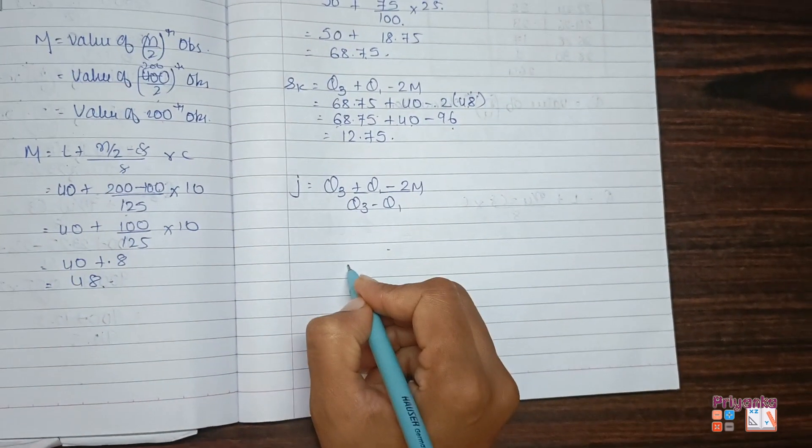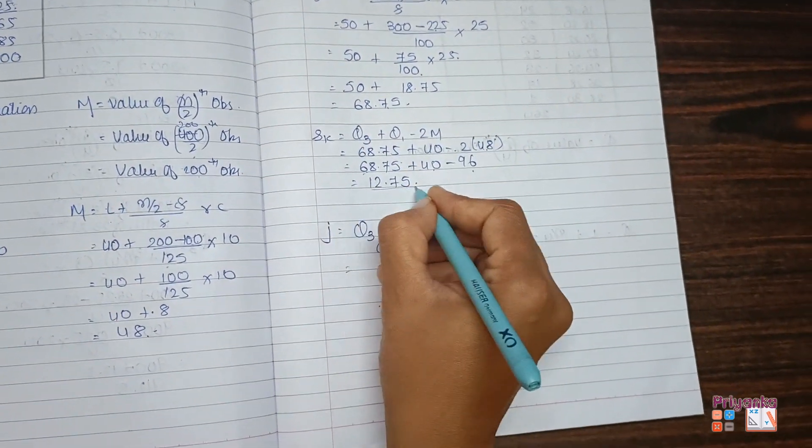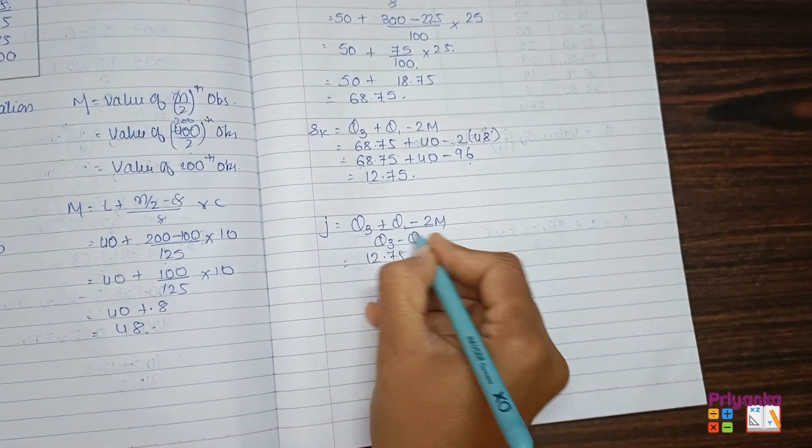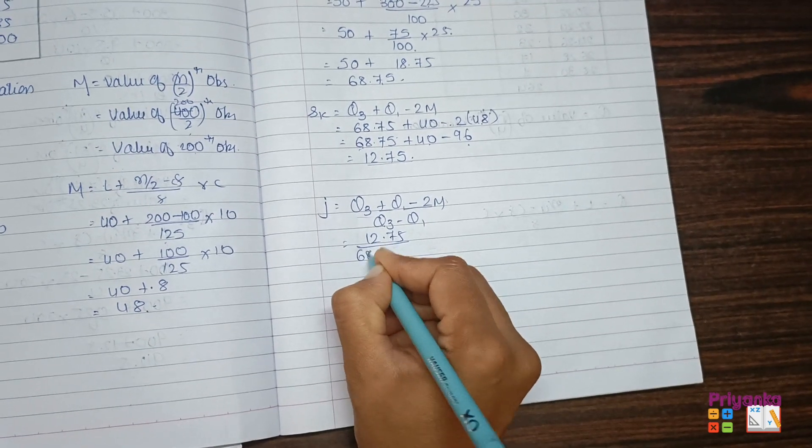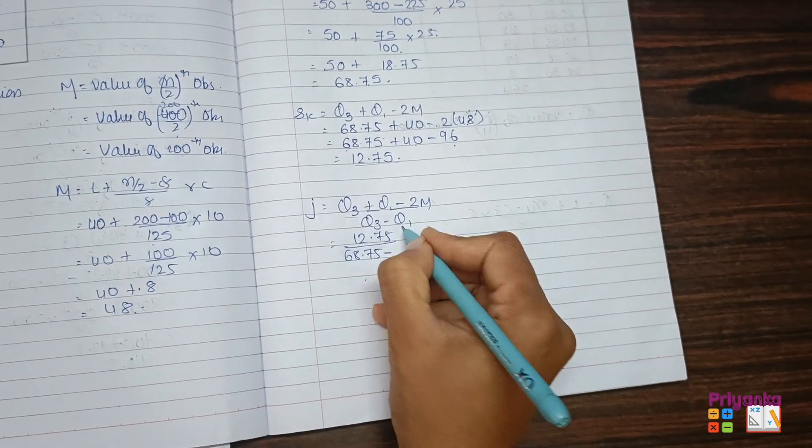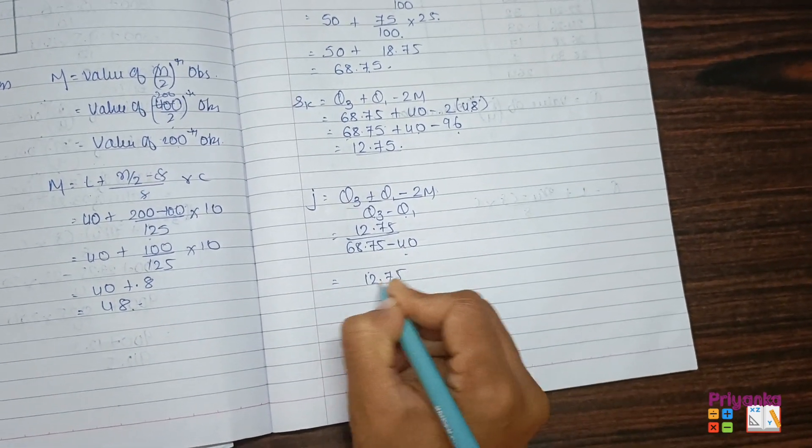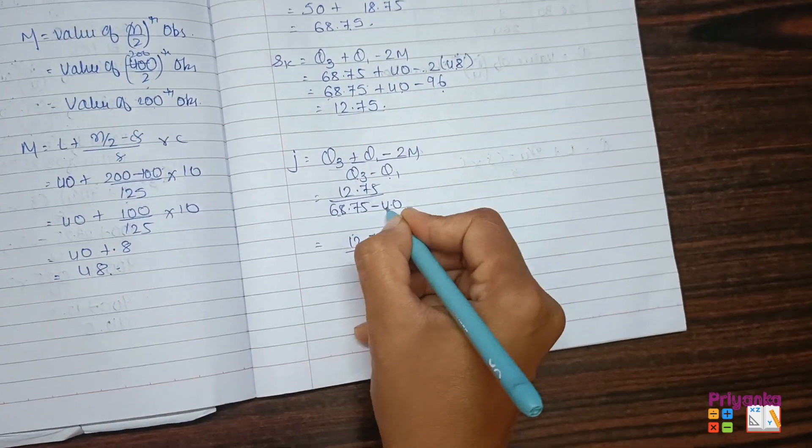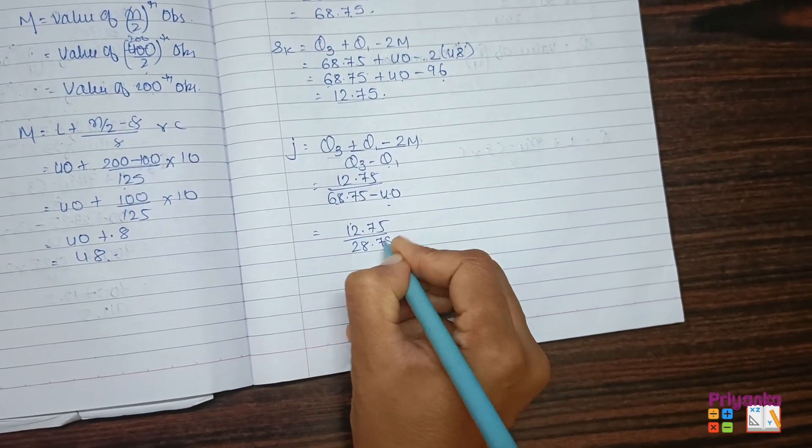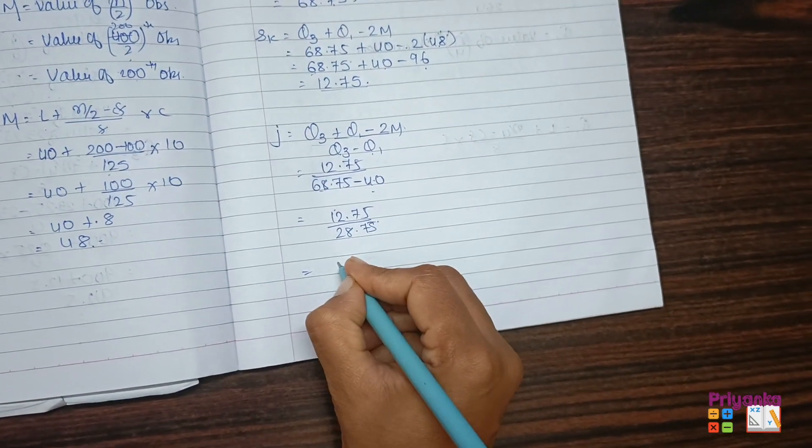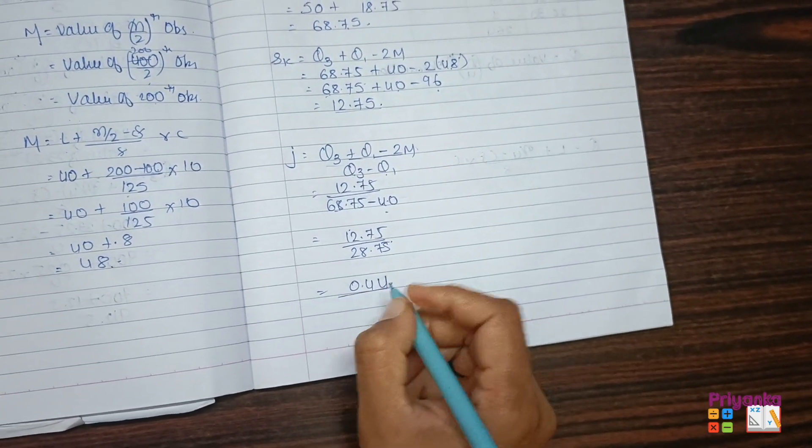Which is 96 plus 68.75 plus 40, which will be 108.75 minus 96. Your answer will be 12.75. Next, I'm going to solve the coefficient which we have already solved. I'm just taking directly this 12.75 for this equation upon Q3, which is 68.75 minus Q1, which is 40. So divide, you will get 28.75. So the final answer of coefficient of skewness will be 0.44, which is positive skewness.